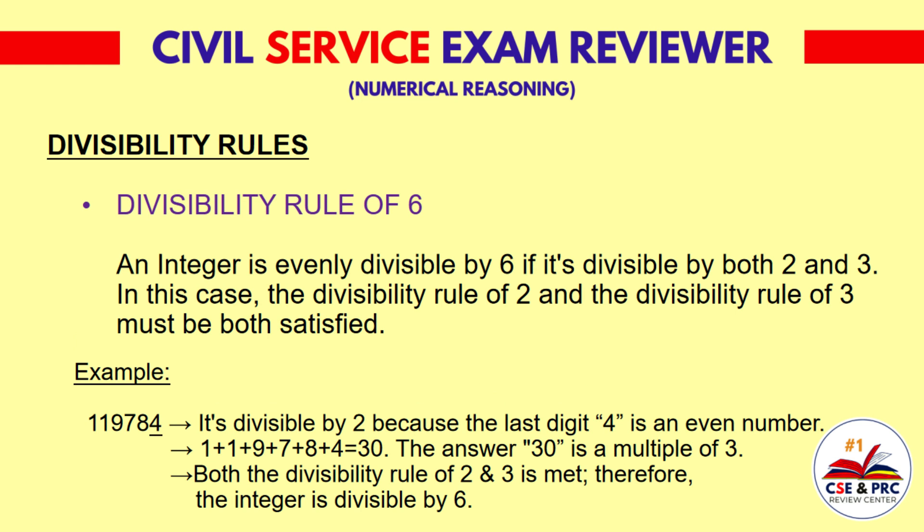Divisibility Rule of 6: An integer is evenly divisible by 6 if it's divisible by both 2 and 3. The divisibility rule of 2 and the divisibility rule of 3 must both be satisfied. For example, 119,784 is divisible by 2 because the last digit 4 is an even number, and the sum of its digits is 30, which is a multiple of 3. Both rules are met, therefore the integer is divisible by 6.